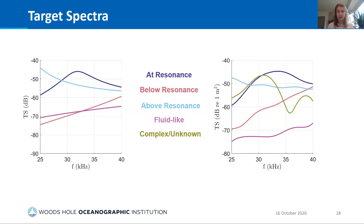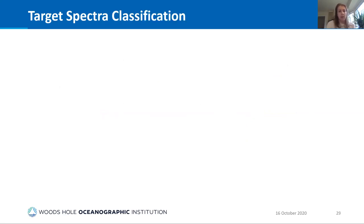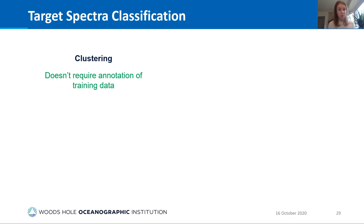By classifying target spectra into these groups we can draw conclusions about what types of organisms we're seeing. We can do some annotation by hand — Chris Bassett published a paper with preliminary hand annotation and analysis from DEEP SEA. But to apply this to really long datasets and compare between dives and sites, we need an automated approach. One option is unsupervised clustering, where an algorithm divides data into groups without training data — the advantage is no training data required — but clusters aren't informed by the scattering physics and we need to choose the correct number of clusters. Initial clustering attempts didn't work very well.